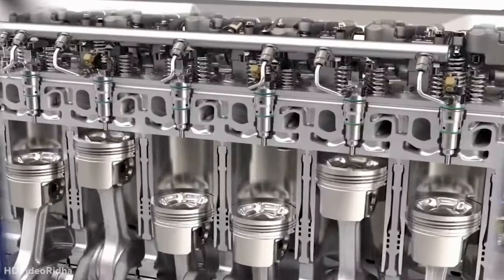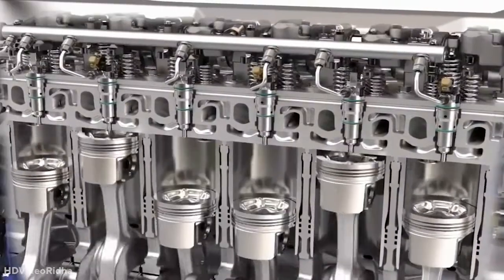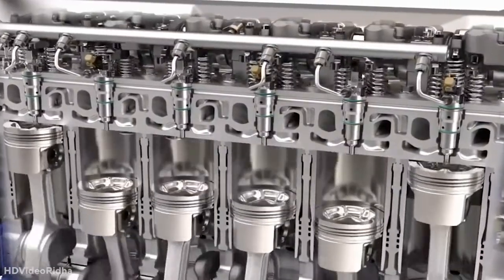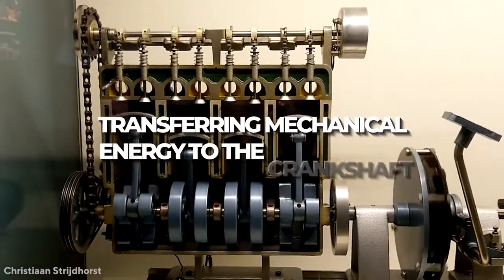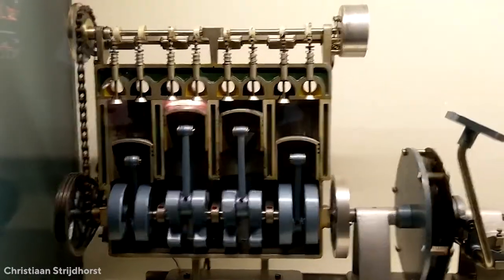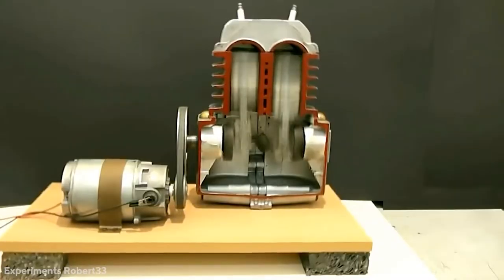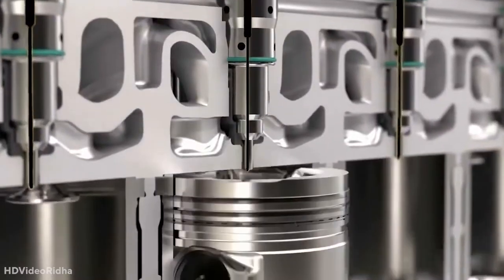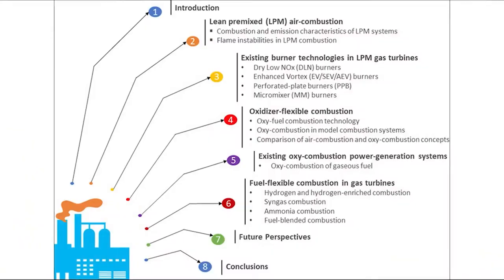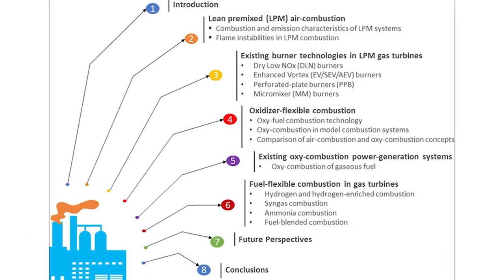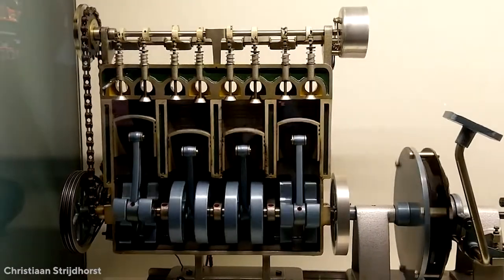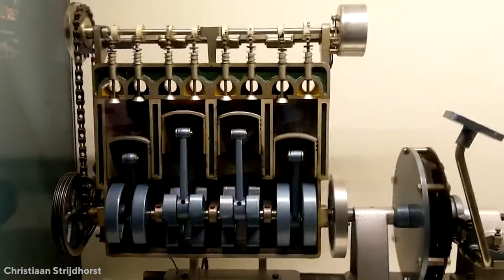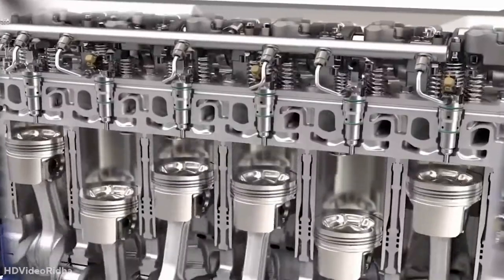Number 3: Piston. A piston moves in a reciprocating motion inside the cylinder, transferring mechanical energy to the crankshaft via the connecting rod. The piston is designed to be strong, light, and capable of withstanding the pressure and temperature generated by the combustion of fuel. The piston is typically made of cast iron or an aluminum alloy.